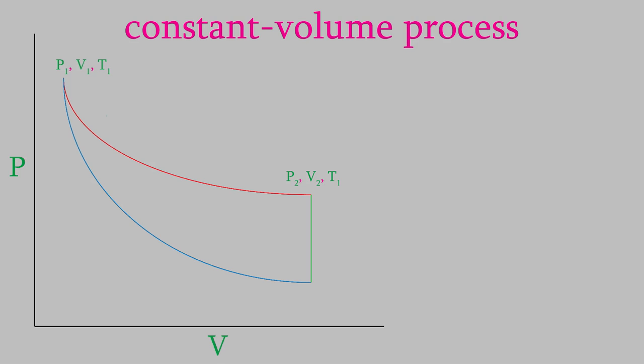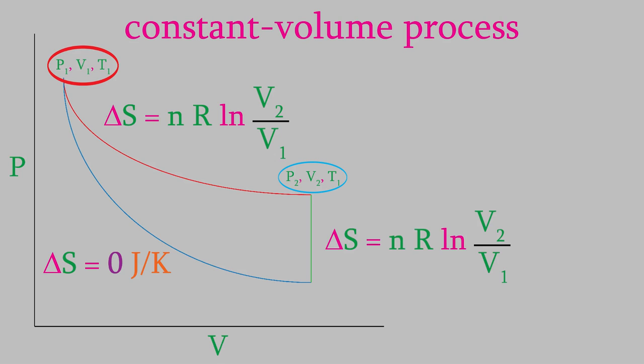Next is the constant volume process. For that process, we can use the fact that entropy is a state function. Therefore, the entropy it takes to get from this point to this point should be the same no matter how we get from one point to the other. That means that the sum of the entropies for the adiabatic and constant volume paths should be the same as for the isothermal path. Since the entropy for the adiabatic path is equal to zero, that makes the entropy for the constant volume path nR times the logarithm of V2 over V1, the same as for the isothermal path.